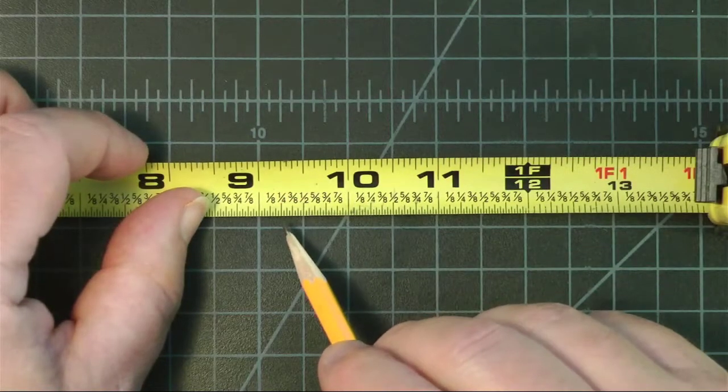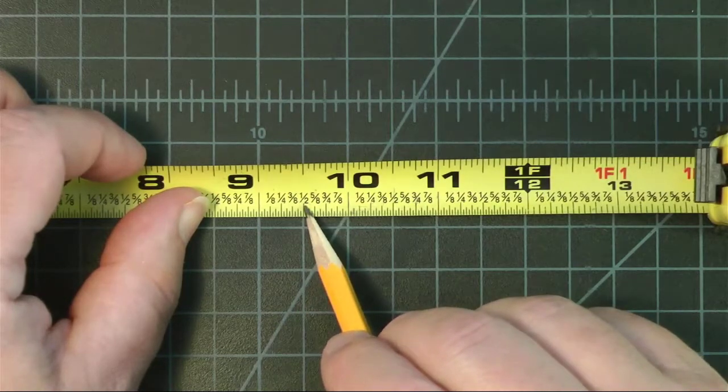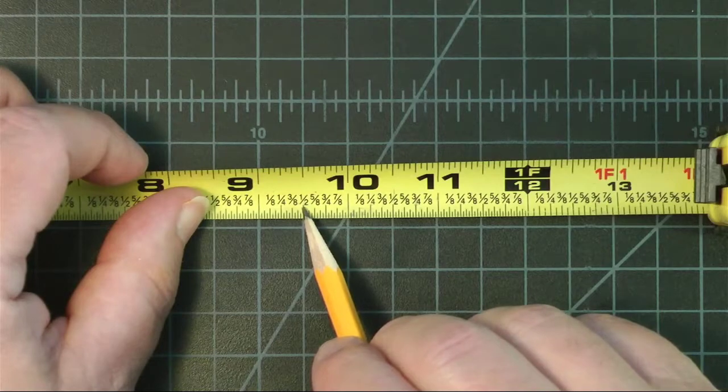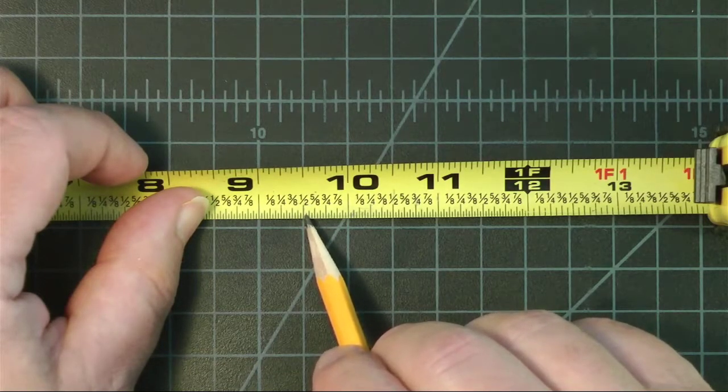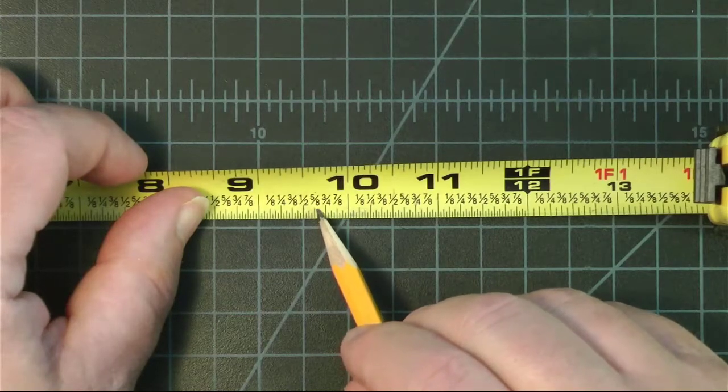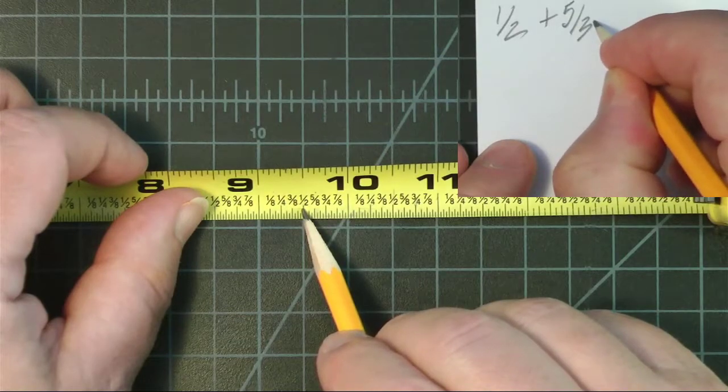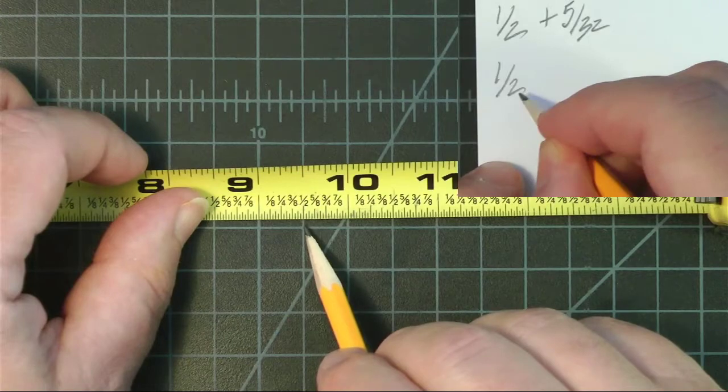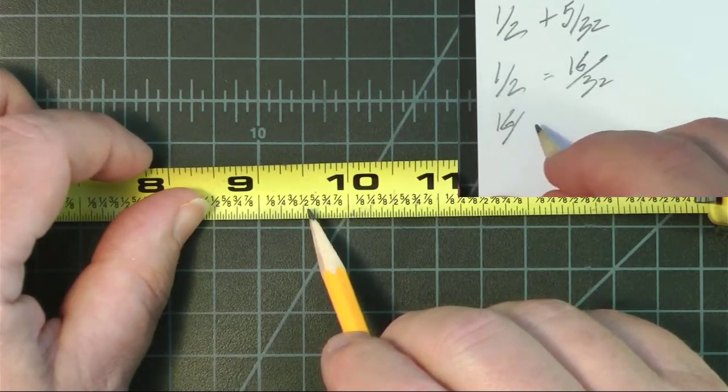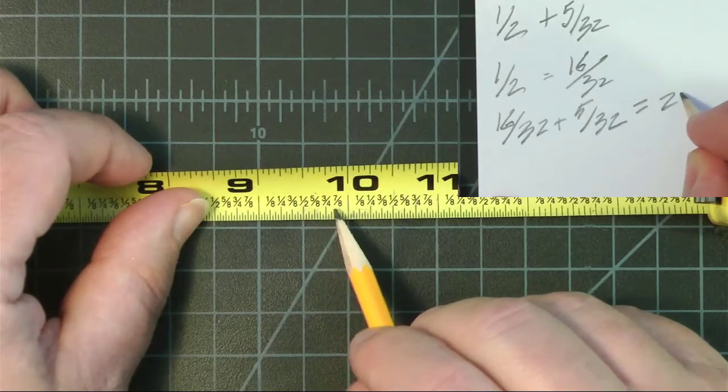And finally, let's do thirty-second math. If we take our tiniest lines, the thirty-seconds, and we want to add them to another fraction, let's say half an inch. Let's do half an inch plus 5/32. So we could count them: half an inch, which is 16/32, plus 5. One, two, three, four, five would be right there. So that 16 plus 5 is 21/32 if we count the lines. Let's do it in math. So we have our half, which we have to convert into a like-minded fraction. So that would be 32 on the bottom, and half of 32 is 16. So we have 16/32 plus the 5 equals 21/32.